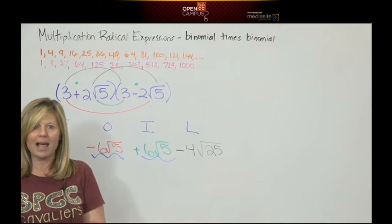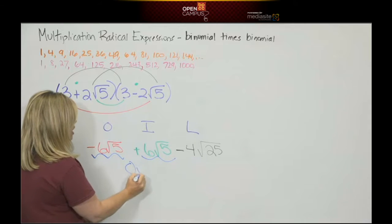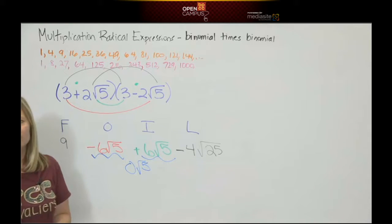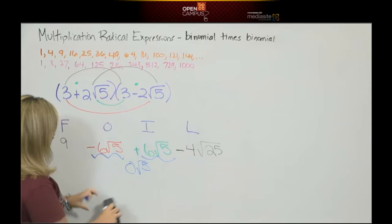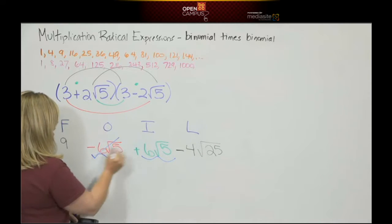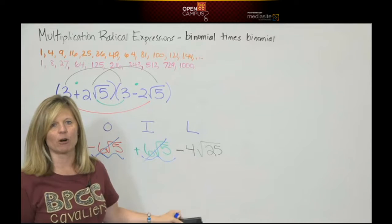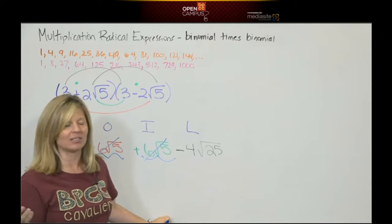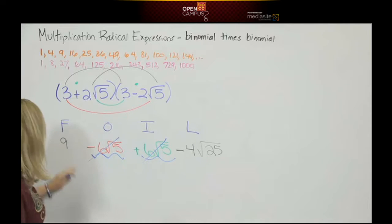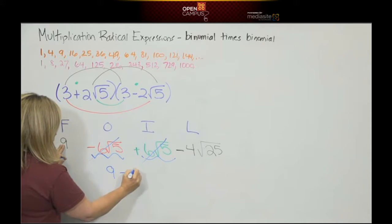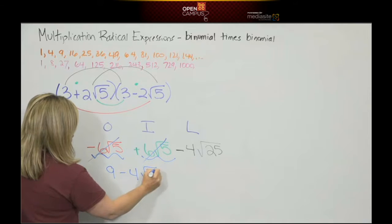Do you really think in math we are going to write 0 square root of 5? No. There's nothing there. There are no square roots. So they cancel out. Remember, these terms are called additive inverses. We added the opposite. It cancelled it out. So now we have 9 minus 4 square roots of 25.